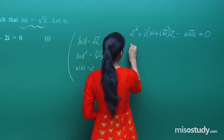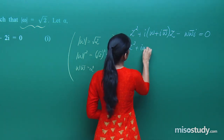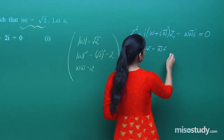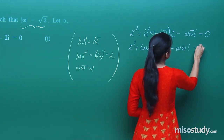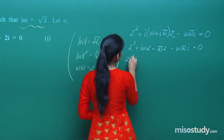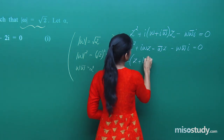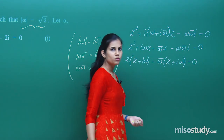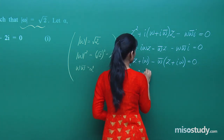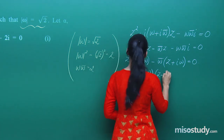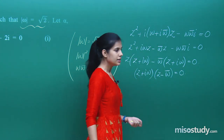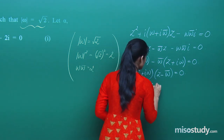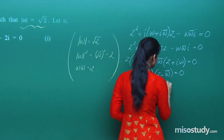Clear? If you open this up you get iota omega z minus omega bar z, because iota times iota is iota squared which is minus 1, and you are left with omega omega bar iota equaling 0. From here if you take out z common you are left with z plus iota omega. From here you take out omega bar common you are left with z plus iota omega. And therefore you have two factors: z plus iota omega and z minus omega bar.